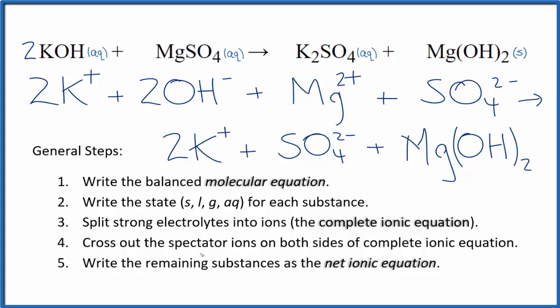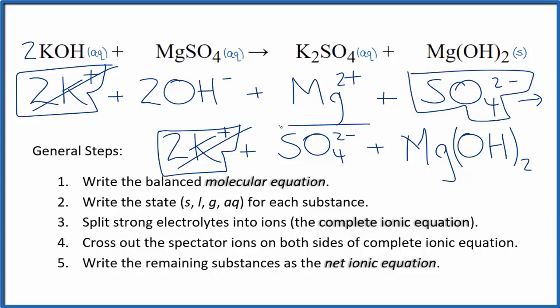Now we can cross out the spectator ions. So I can see in the reactants there are two potassium ions, and again, two potassium ions in the products. We'll cross those out. And then we have a sulfate ion here, and we have a sulfate ion right here. Spectator ions, we cross them out. What's left, that's the net ionic equation for KOH plus MgSO4.